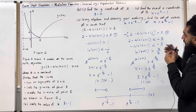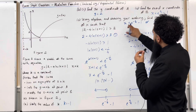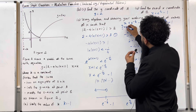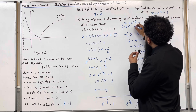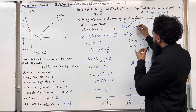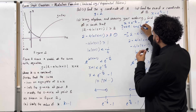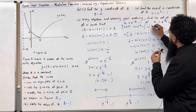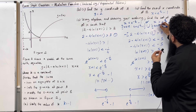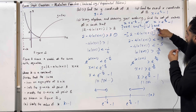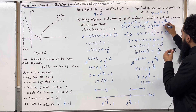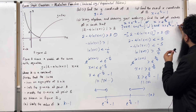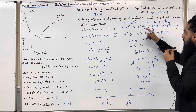Writing this in set notation: x is an element of the real numbers such that x is less than e to the power minus a quarter minus 1, union, x is an element of the real numbers such that x is more than e to the power 5 over 4 minus 1. That is the final answer in set notation.